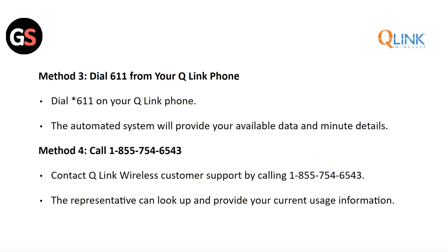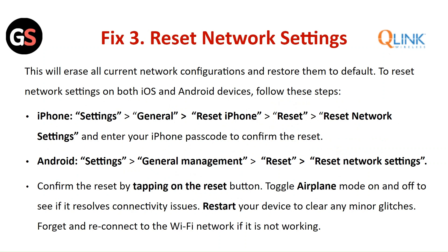Fix three: Reset the network settings. This will erase all current network configurations and restore them to default. To reset network settings on iOS, go to Settings and General, then Reset iPhone. Click on Reset and tap on Reset Network Settings. Enter your iPhone passcode to confirm the reset.